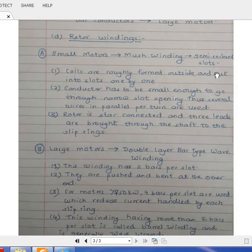When semi-enclosed slots are there, your windings are roughly wound outside and they are put slot by slot inside. Because you have to control your area of conductors, you have to increase your current based on current density calculation. And because your current is going to increase, you have to apply a number of parallel paths. So several wires in parallel per turn are used. The rotor is star connected and three leads are brought through the shaft to the slip rings.